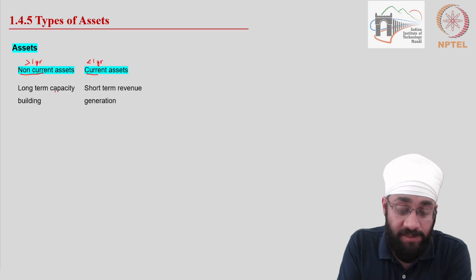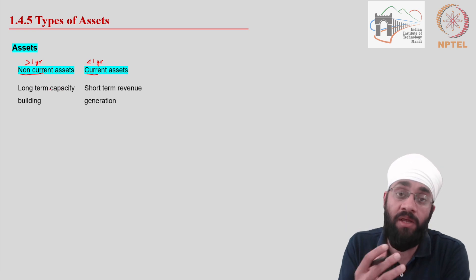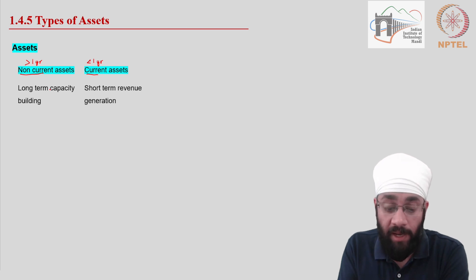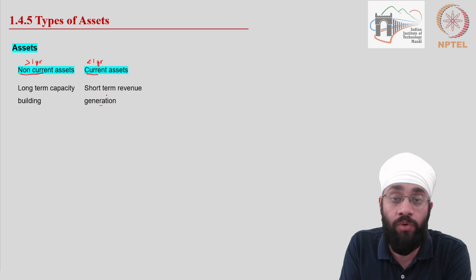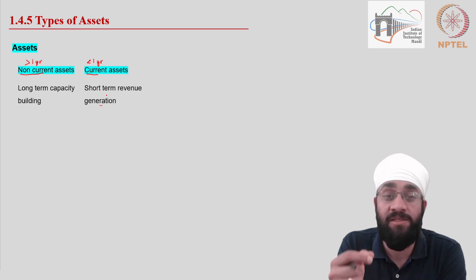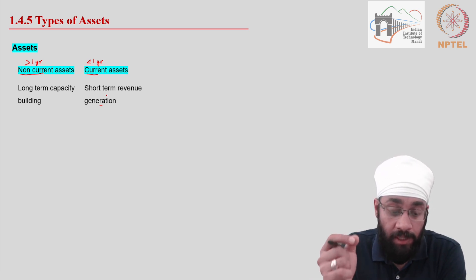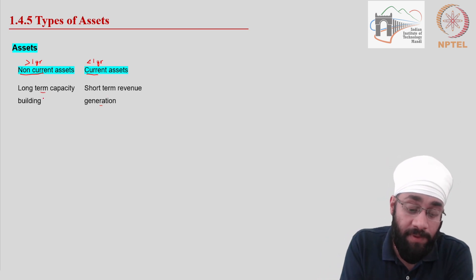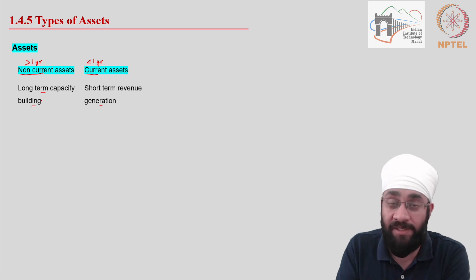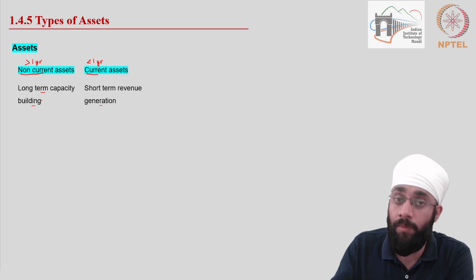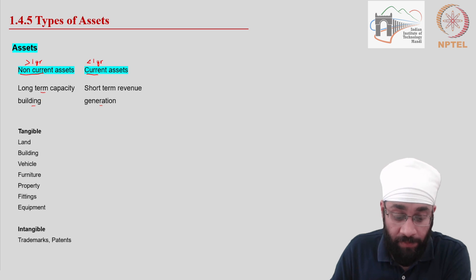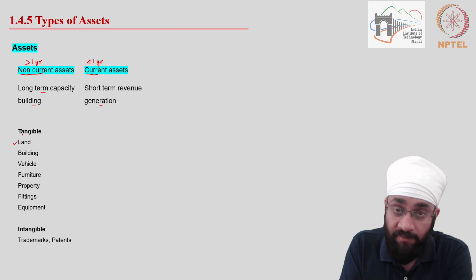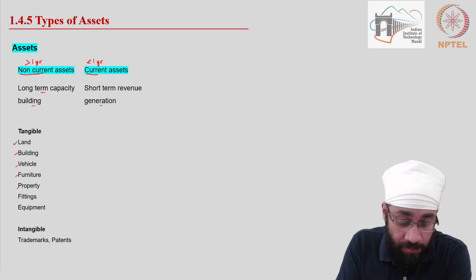Non-current assets are the ones which help you build capacity in the long run. On the other hand, current assets help you generate revenue in the short term — they build a temporary capacity for you to generate income in that particular year. In contrast, non-current assets are going to help you build capacity to generate revenue over multiple years. Examples of non-current assets are land, building, vehicle, furniture, property, fittings, and equipment.